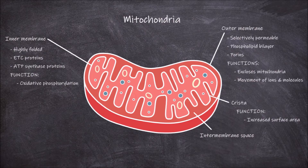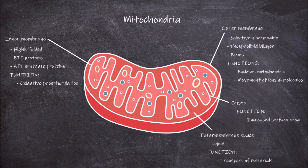In between these two membranes is the intermembrane space. The intermembrane space consists of a liquid similar to the cytosol of the cell. The function of this intermembrane space is in the transport of proteins, lipids, and other ions between the outside of the mitochondrion and the matrix inside.